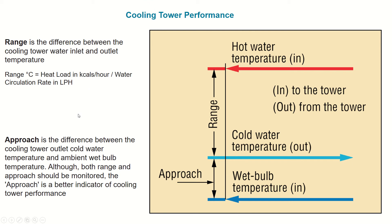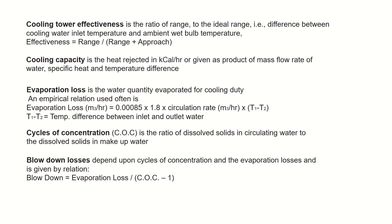Approach is the difference between the cooling tower outlet cold water temperature and the ambient wet bulb temperature. There will always be a difference between the outlet water temperature and the ambient temperature, as a cooling tower cannot achieve the ambient temperature — that is only possible in the case of perfect cooling.